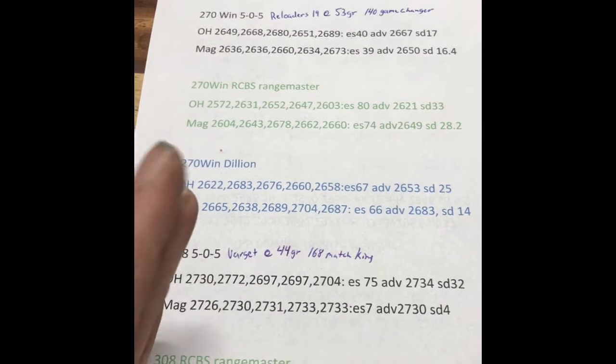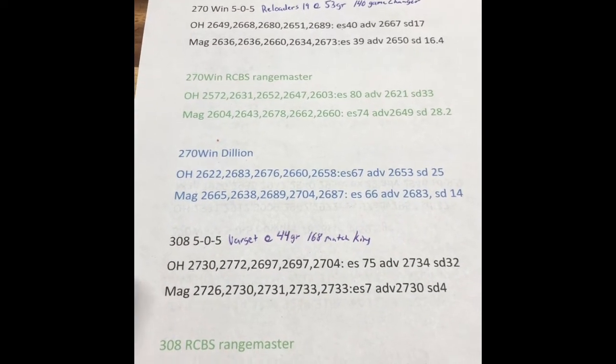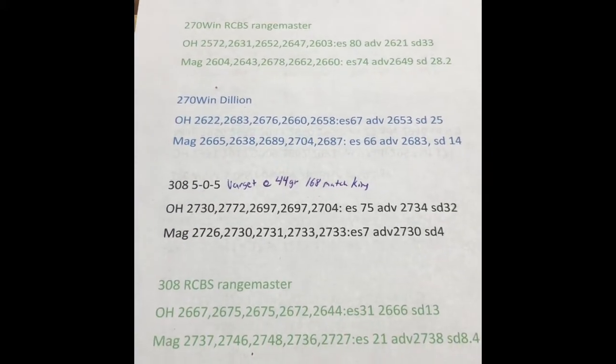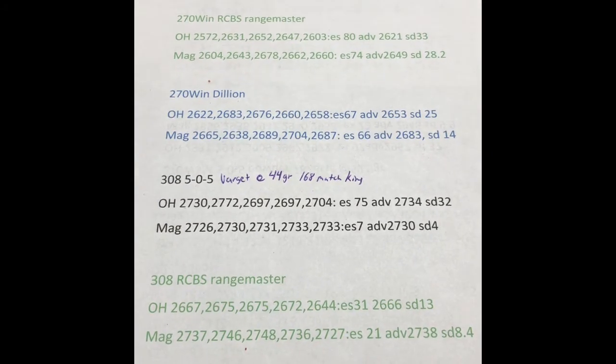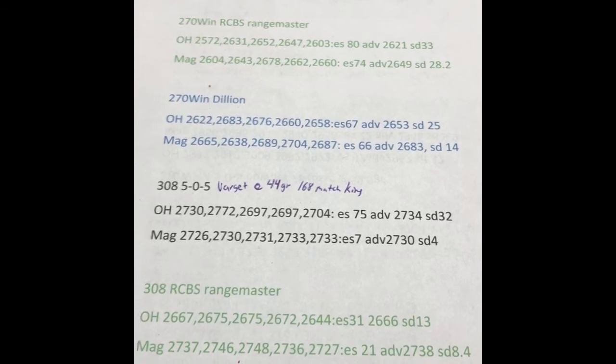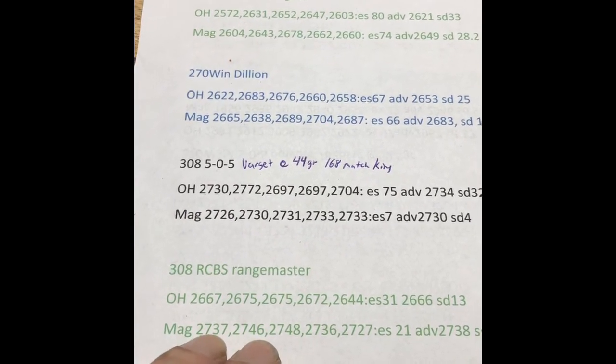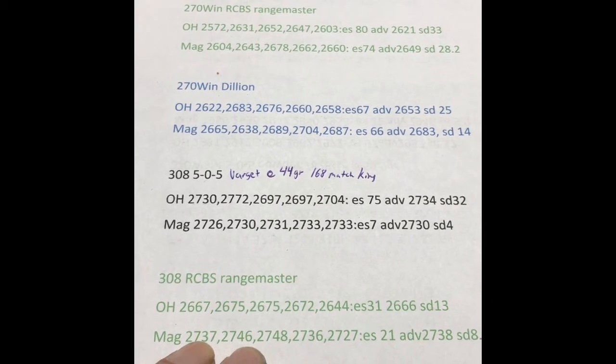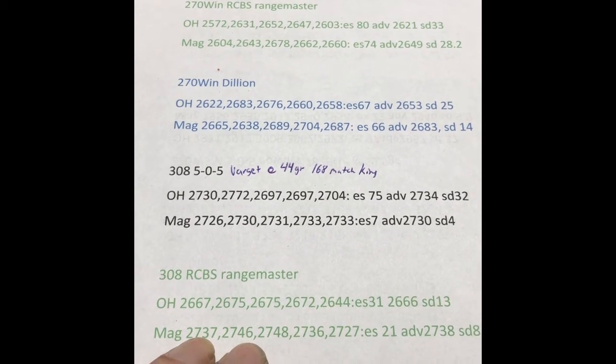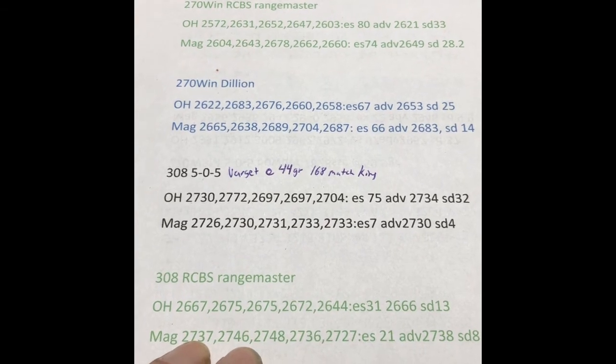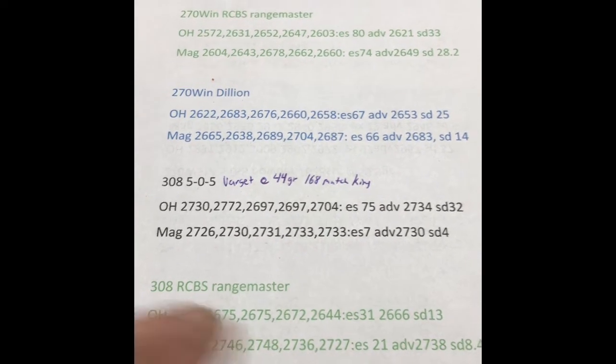It was very, very disappointing whenever that chronograph showed up to me with these numbers. I don't know what's going on with the Oehler over that. But, according to the MagnetoSpeed, that right there was probably the most consistent shot was with the beam scale.